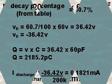The discharge current equals V sub R divided by the resistance R, or minus 36.42 volts divided by 200k ohms, which equals 0.1821 milliamps.